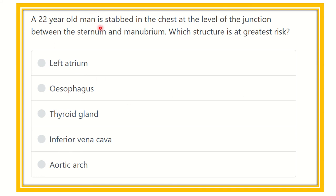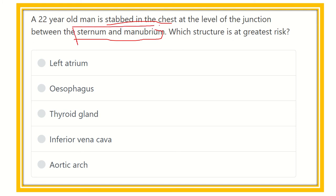Here is the question: a 22-year-old man is stabbed in the chest at the level of the junction between the sternum and manubrium. Which structure is at the greatest risk of injury? After careful reading, the key point is the stab is at the level of the junction between the sternum and manubrium.